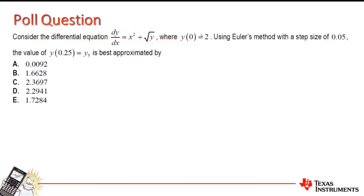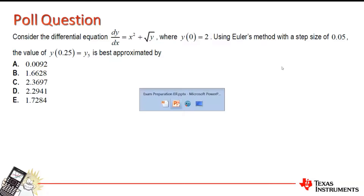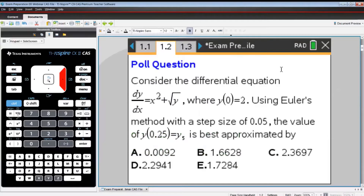Let's make a start. First, we have the poll question. Consider the differential equation dy/dx equals x squared plus square root of y, where y at x equals zero is equal to two. We're going to use Euler's method with a step size of 0.05, and we have to find the value of y5, which is y at x equals 0.25. Using Euler's method to approximate that, have a go at this question and put your answer into the chat box.